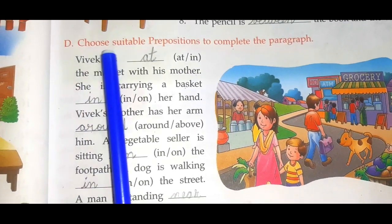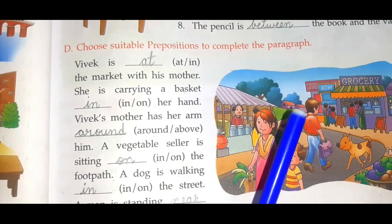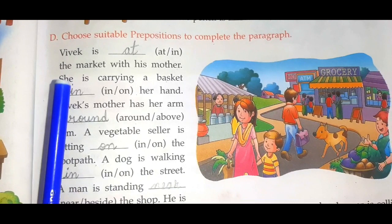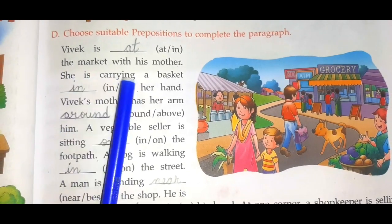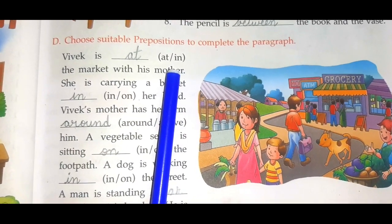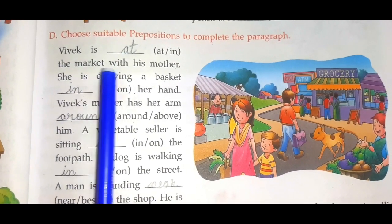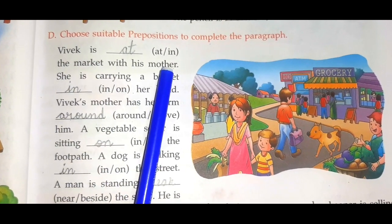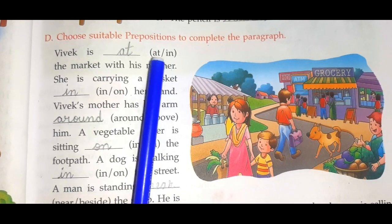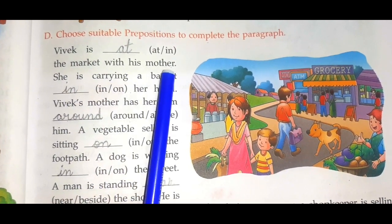Next is question number D: choose suitable prepositions to complete the paragraph. Here we have a picture of a marketplace. Sentences are given with two options for each — we have to choose the correct answer. Vivek is dash the market with his mother — two options are 'at' or 'in' — so we'll use 'at': Vivek is at the market with his mother.